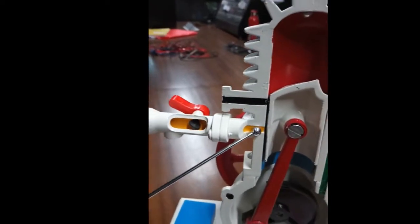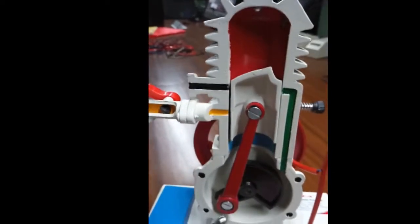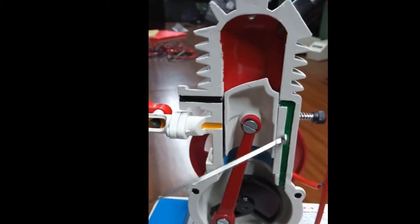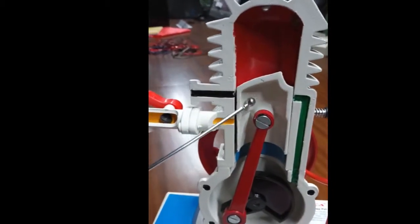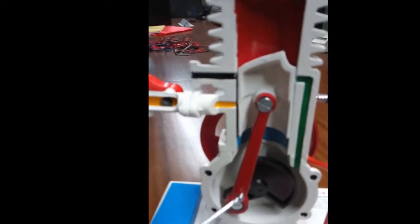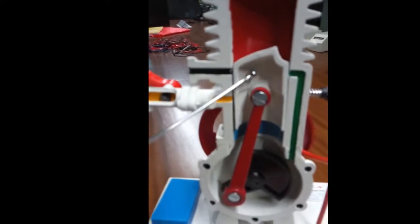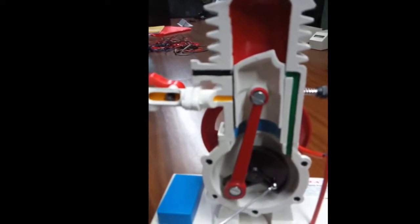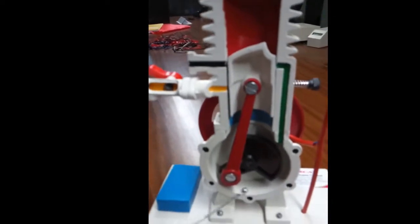Here this is the exhaust port, this is the intake port, and this one here is the transfer port. This is the piston, this is the connecting rod that is connecting the piston and this crankshaft.